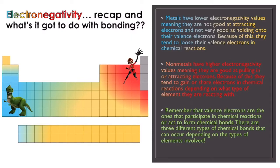We want to talk about electronegativity because electronegativity really dictates the type of bonds that are formed, or the electronegativity of the atoms involved in forming that bond. We're going to recap on what electronegativity is and then talk about how it determines the bond type.